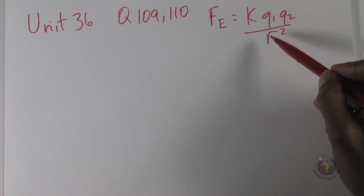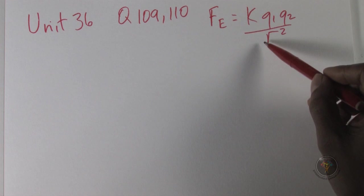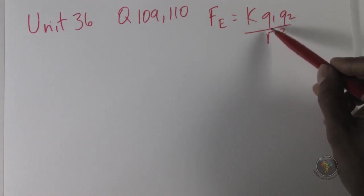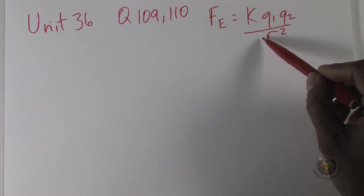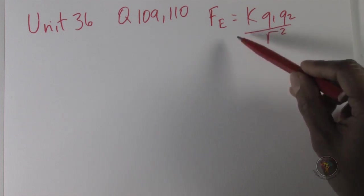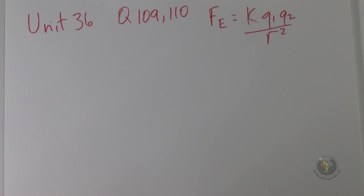Typically, if you double the distance between two point charges, you quarter the force because it's inverse square. If you triple the distance, three times r, then the three is squared so you get one ninth the force. Those are typical relations.